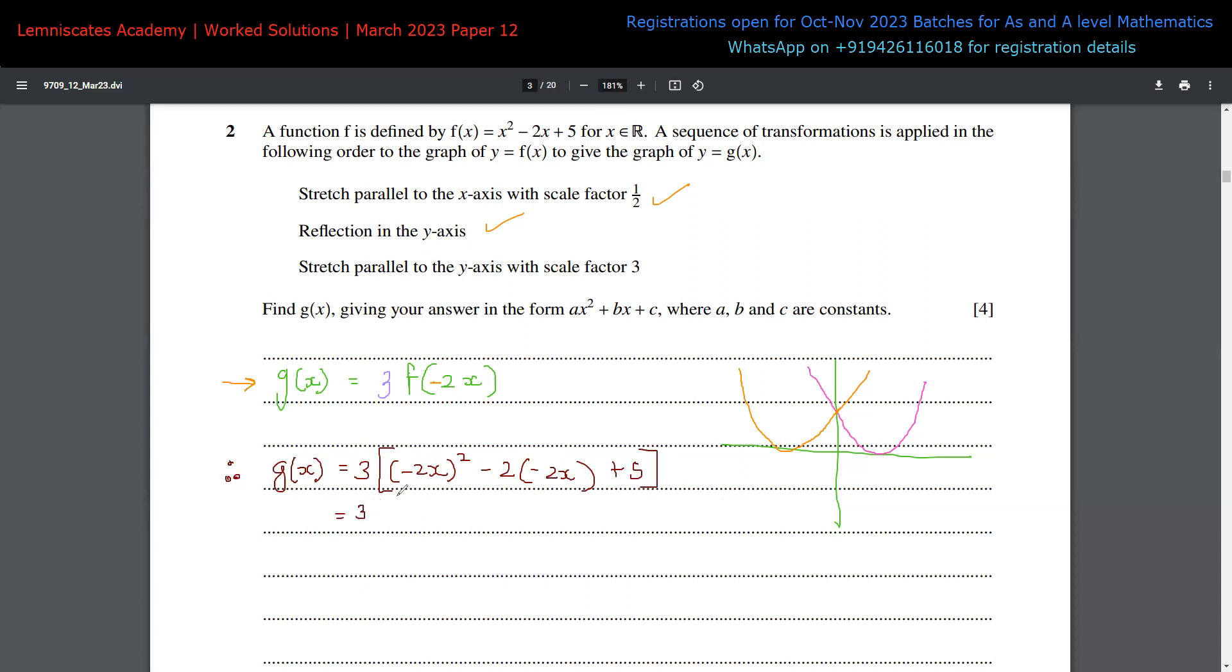Now obviously you can go ahead and simplify this very quickly. The best method that comes to your mind, I'll do it step by step. So this is 3. This becomes minus 2 square is 4x squared. This plus this minus minus becomes plus 2 times 2 is 4, and we are having an x. And lastly we are having a 5.